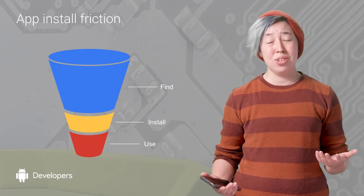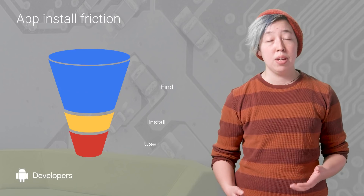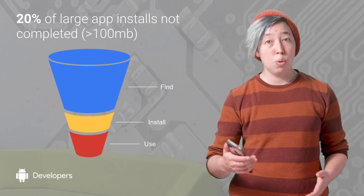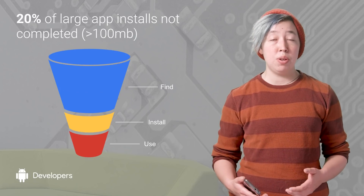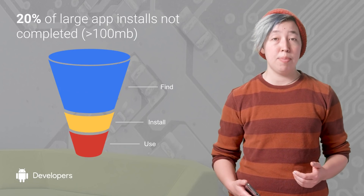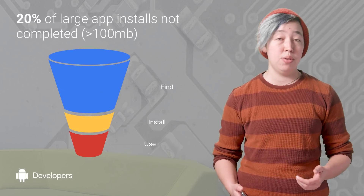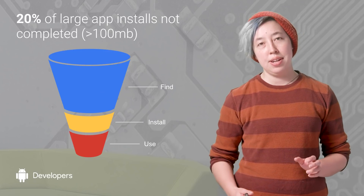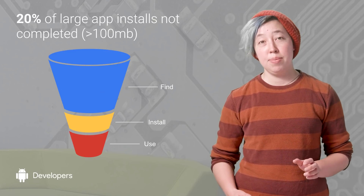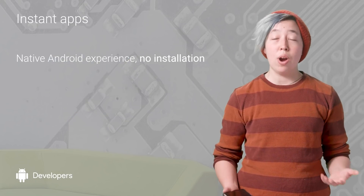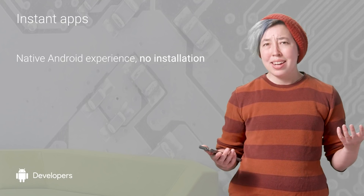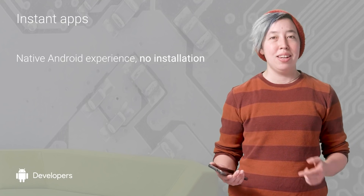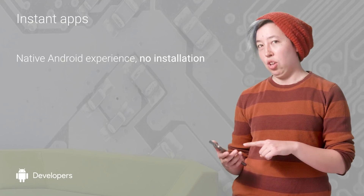And the numbers just get worse as the app size gets larger. For example, 20% of app installs over 100 megabytes are canceled by the user. This is where Android Instant Apps really shines. Instant Apps are native Android apps that require no installation. But what the heck does that actually mean? Let's go ahead and take a look.